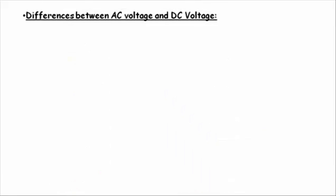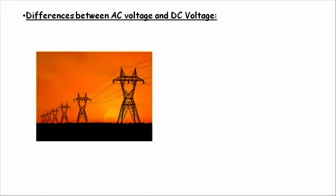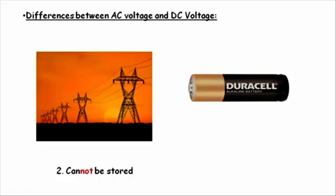Next difference is that the AC voltage is to be used as and when we get it. We have supply at our homes all day. Even if we use it or not, we cannot put a hold on to the supply and save it for later. So the AC voltage cannot be stored, whereas the DC voltage in the form of batteries can be stored.